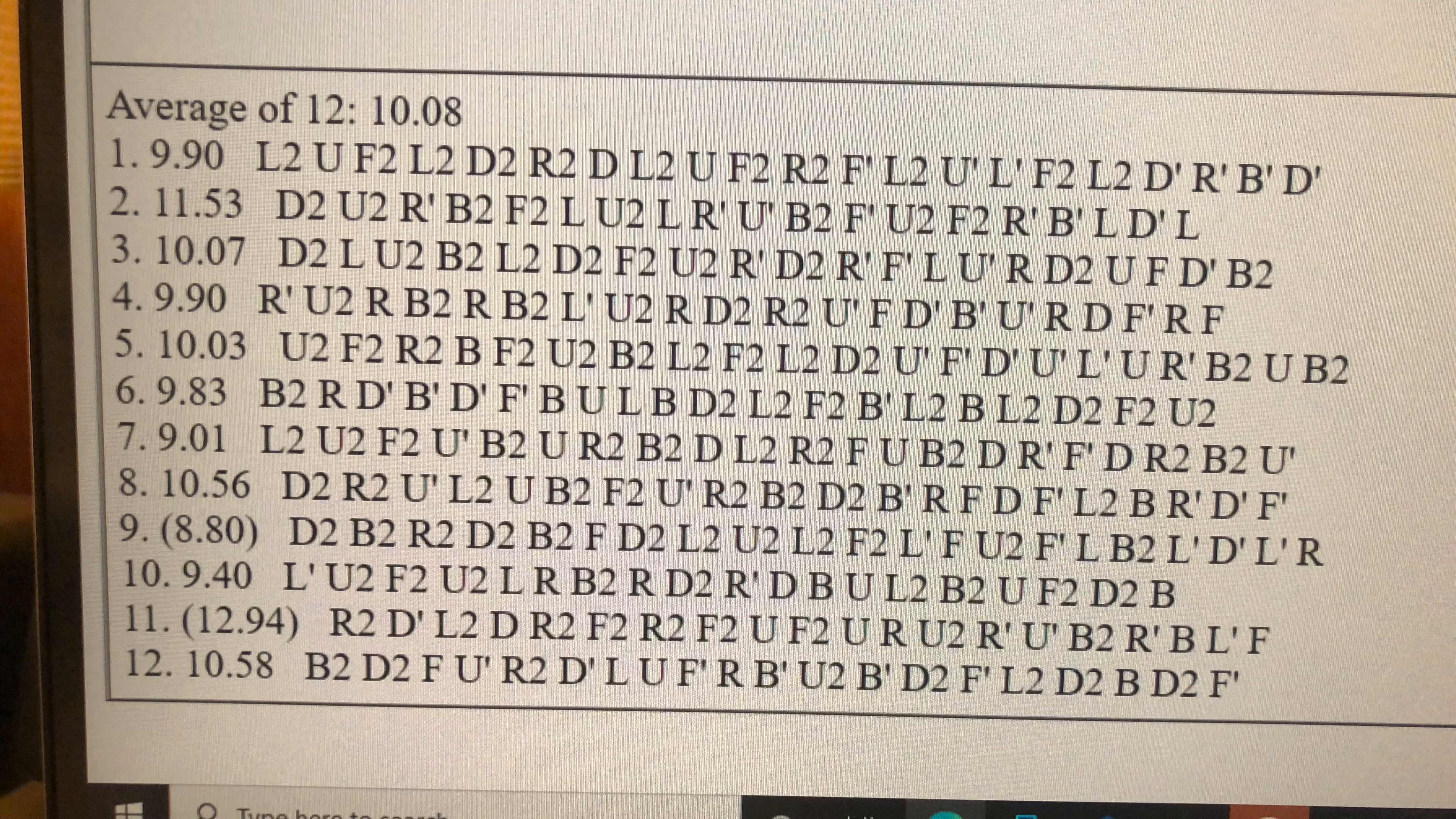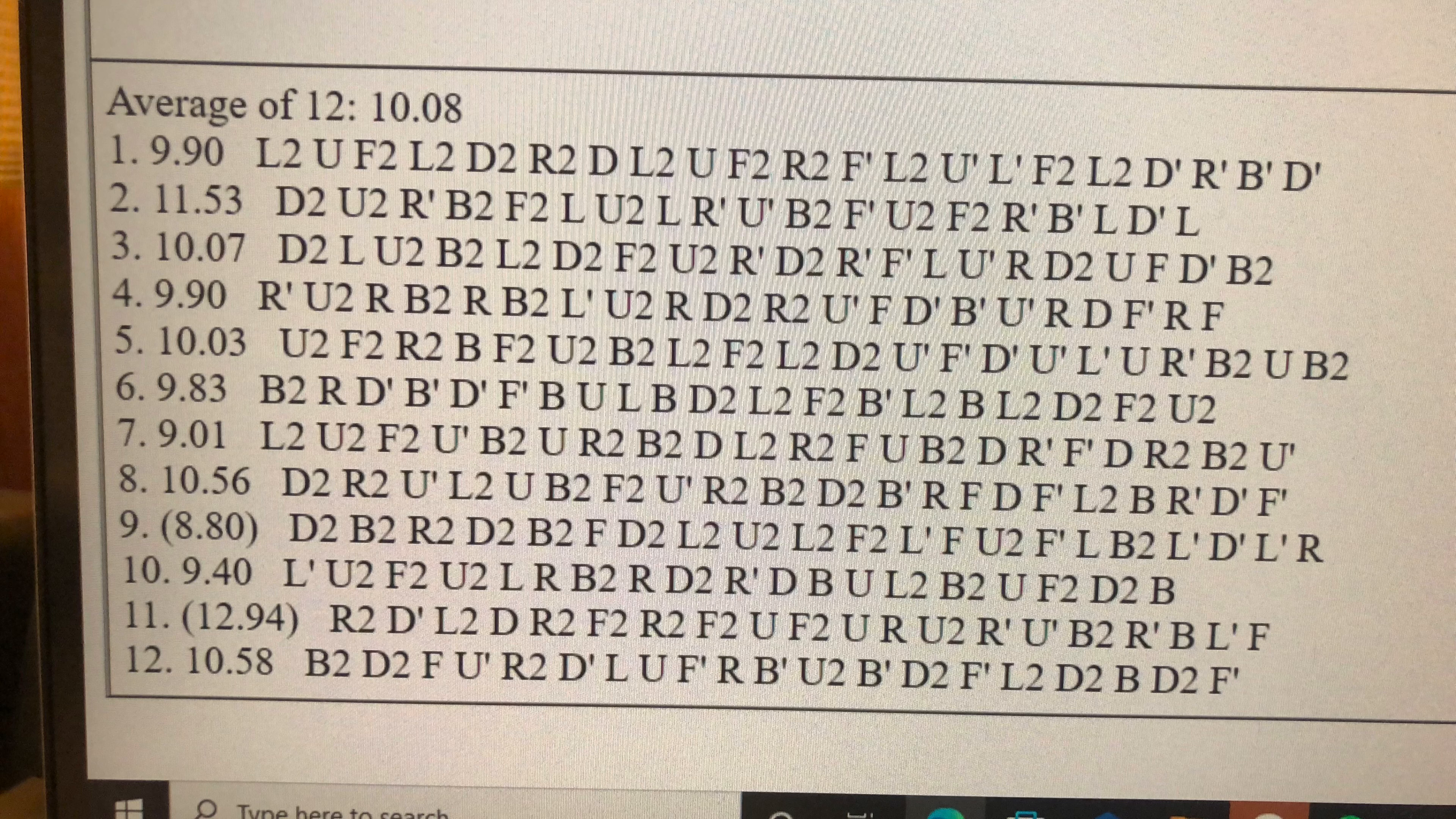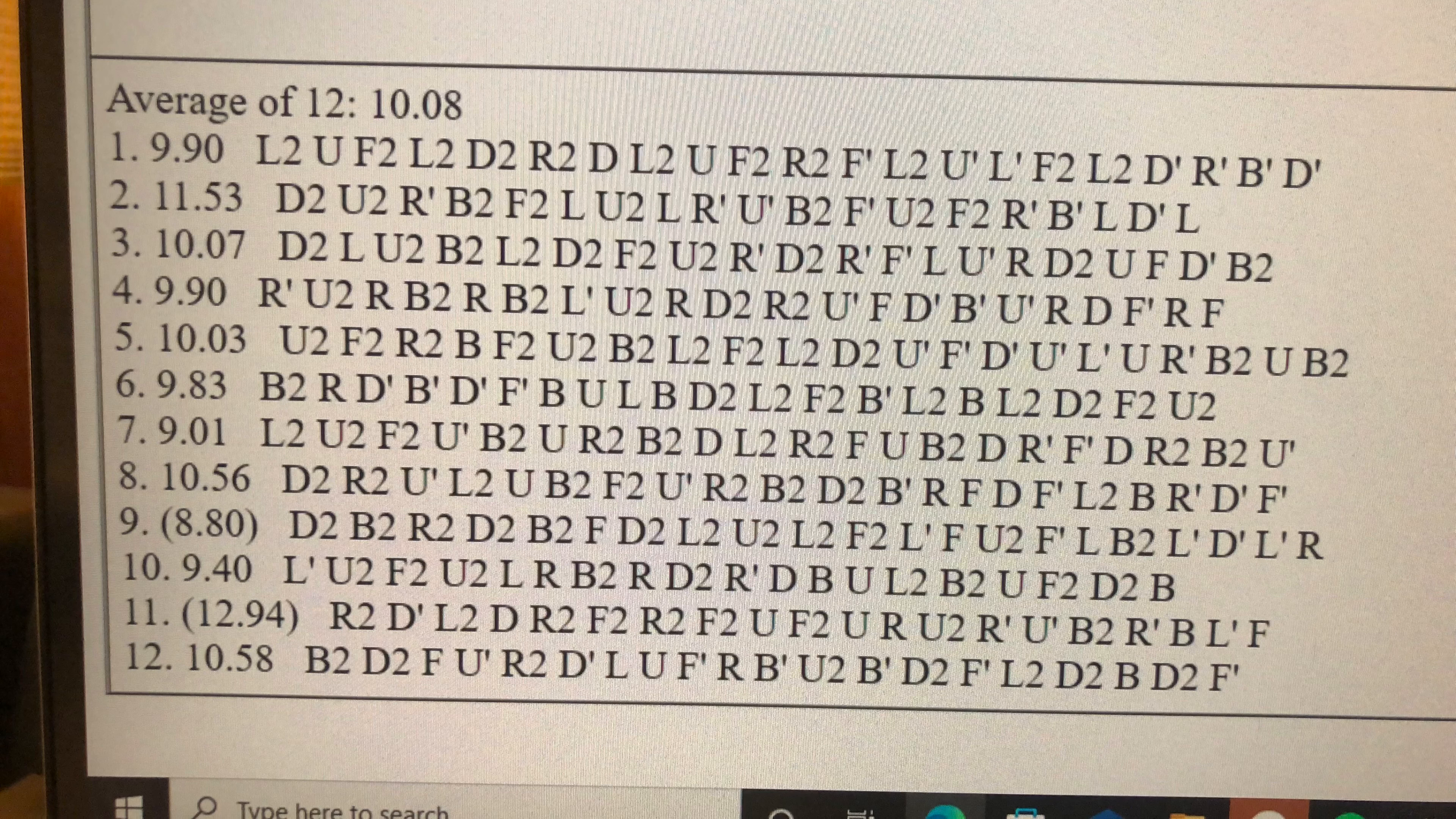Now, the average of 12 at this point in time is 10.08, so we want to drop it by 0.09 seconds. Since there are 10 counting times in an average of 12, we just need the sum of those 10 times to drop by 0.90. So that would either mean having the next solve being a low 9, or just the average of the next two solves to be around 10.3-ish, which is actually pretty doable.